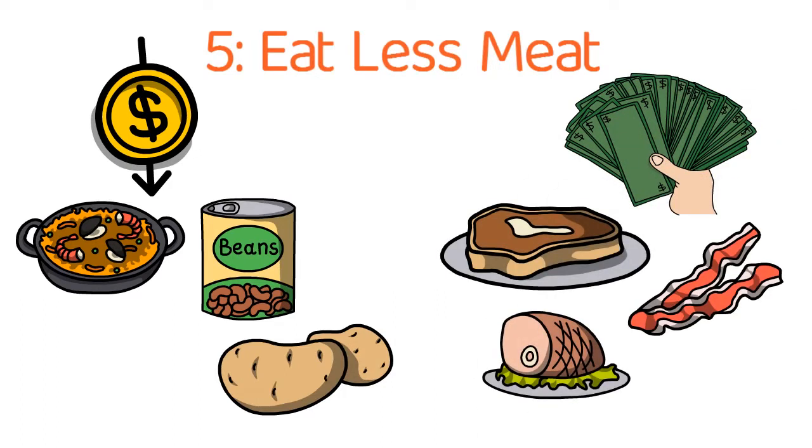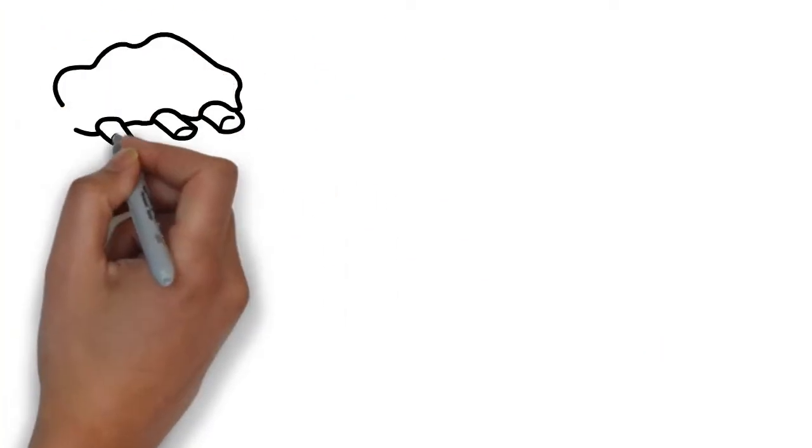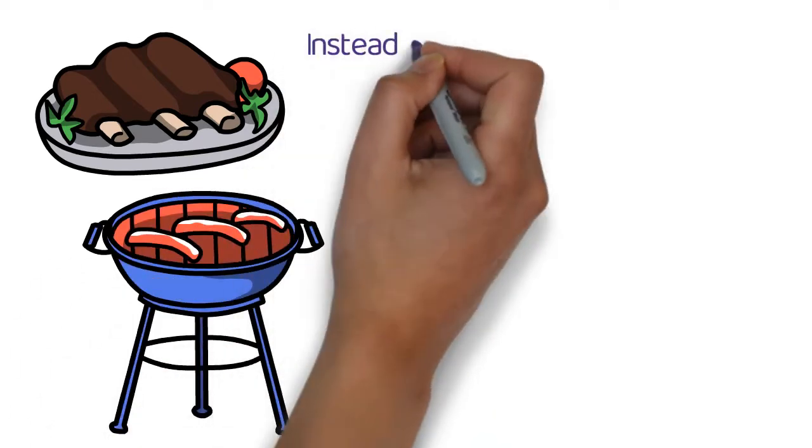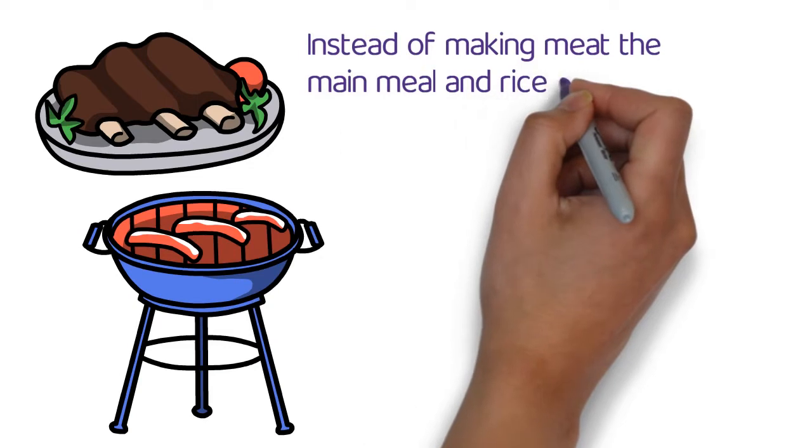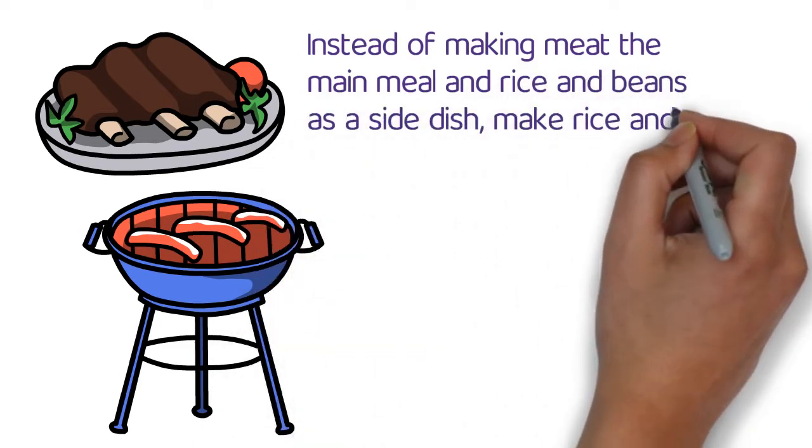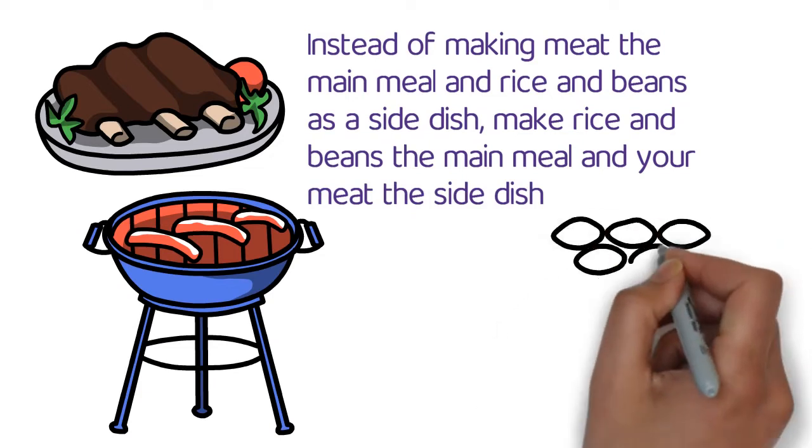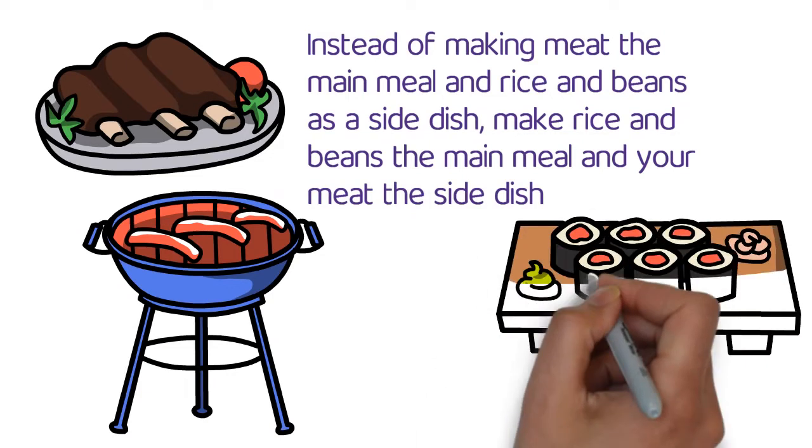Now I'm not saying that you have to cut out meat entirely, although you could. However, it's definitely important that you eat less meat and stretch out your meat. Instead of making meat the main meal and rice and beans as a side dish, make rice and beans the main meal and your meat the side dish. Or maybe just try having meat at one meal during the day instead of all three.